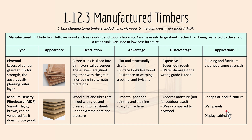1.12.3 is manufactured timbers. Manufactured timbers are made from leftover wood such as sawdust and wood chippings, and they can be made into large sheets rather than being restricted to the size of a tree trunk. They are commonly used in low-cost furniture.